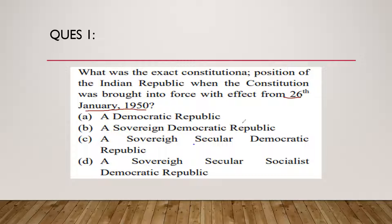After the amendment made in the 42nd Amendment Act, India became a sovereign secular socialist democratic republic. The preamble of the Constitution was amended for the first time by the 42nd Amendment. Before that, India was a sovereign democratic republic. The words 'secular' and 'socialist' were added to the status of the Indian Constitution by the 42nd Amendment. So the answer is: India was a sovereign democratic republic.